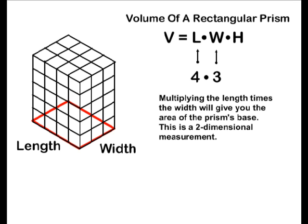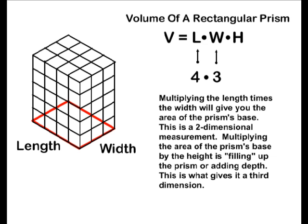After multiplying the length times the width and getting the area of the rectangular prism's base, by multiplying it by the rectangular prism's height, that will give us the volume. Multiplying the area of the prism's base by the height is filling up the prism or adding depth. This is what gives our rectangular prism a third dimension, or gives it volume.